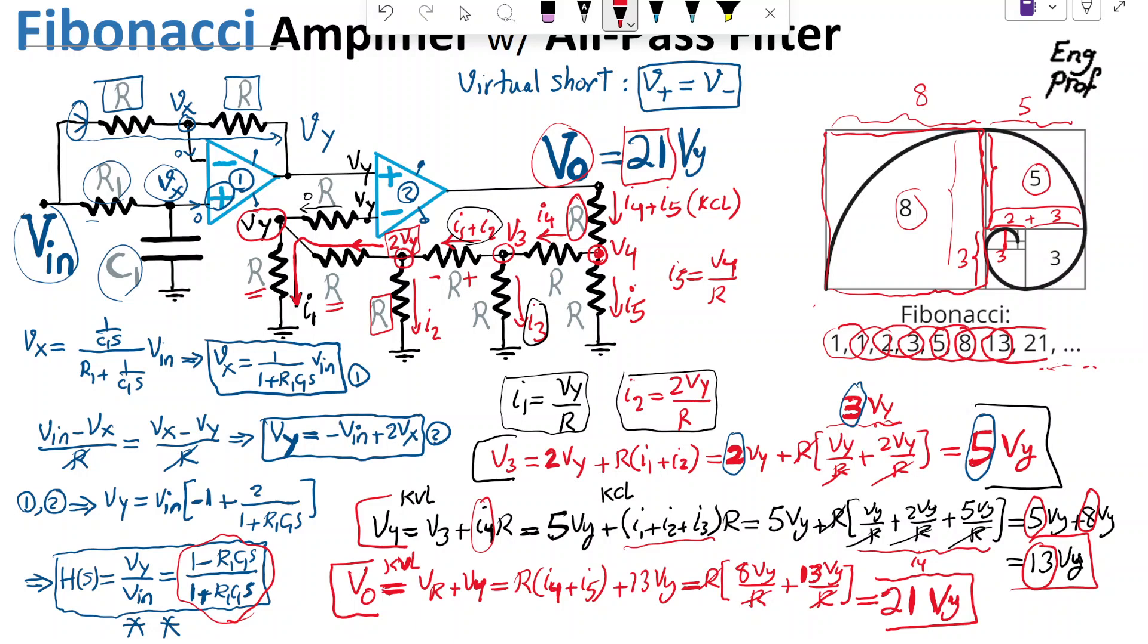I hope that this example is helpful in terms of showing how we can design a Fibonacci amplifier and also how we can deal with an all-pass filter.